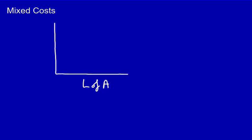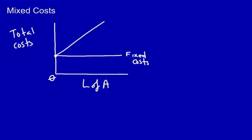the y-axis is total costs. Because it's a mixed cost, there's going to be a fixed cost component. Even if we produce zero, it's still going to cost us something. We also have our variable costs. Variable costs change with the level of activity. Remember that the slope of this line is equal to the variable cost per unit.